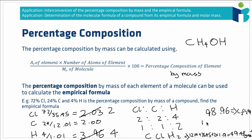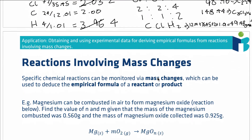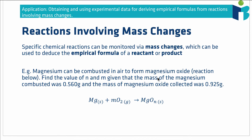Similarly, if the molecular mass is 148.44 — three times the empirical formula mass — the molecular formula would be C₃Cl₃H₆. In general, the molecular mass will be some whole-number multiple of the empirical formula mass, and however many times you multiply that up to reach the relative molecular mass is how many times you multiply up the empirical formula to get the molecular formula.